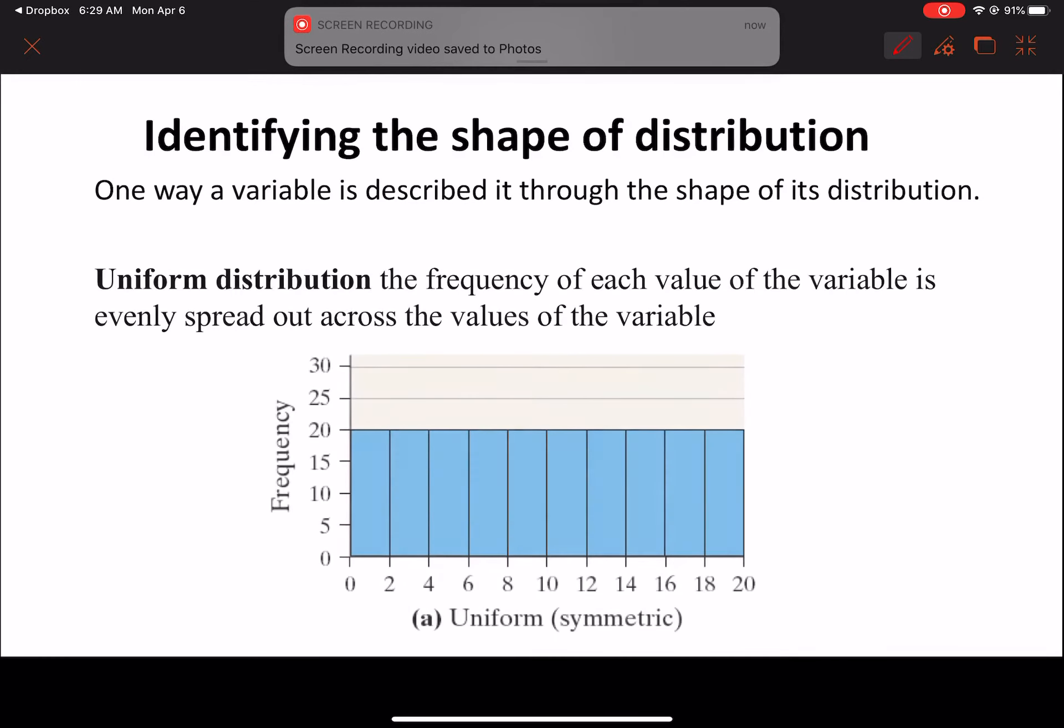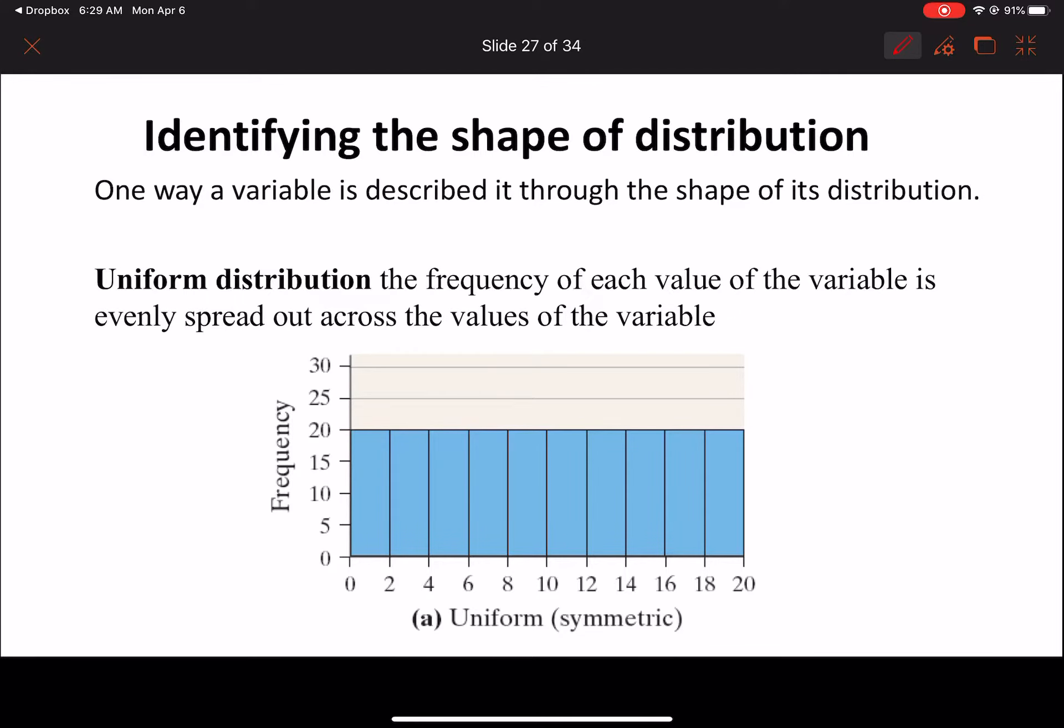So let's talk about different shapes of the distribution. We have a uniform distribution. The uniform distribution just looks like a big rectangle. The frequency of every value is exactly the same. So for example here, this is some random data that we have 0 through 20. And this is a histogram because once again the rectangles are touching each other.